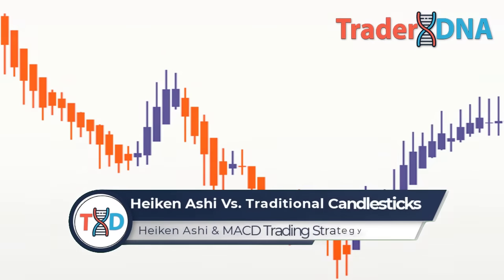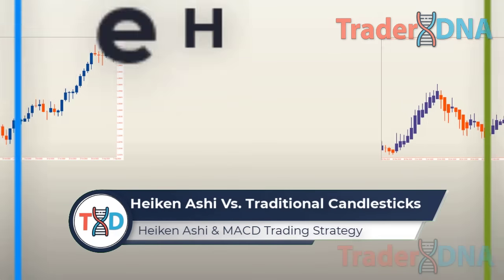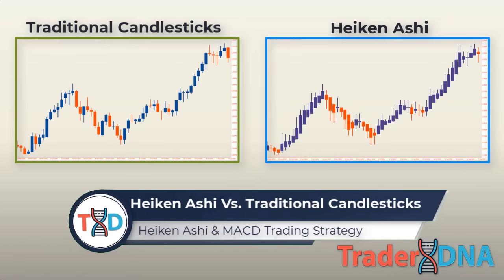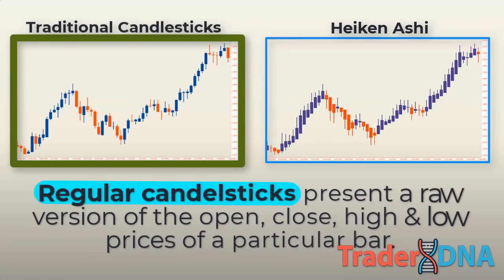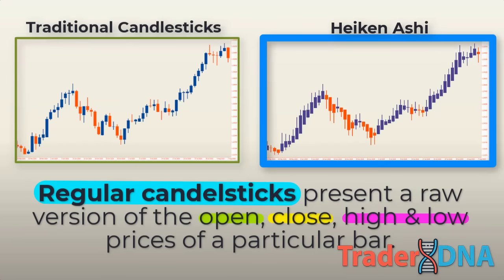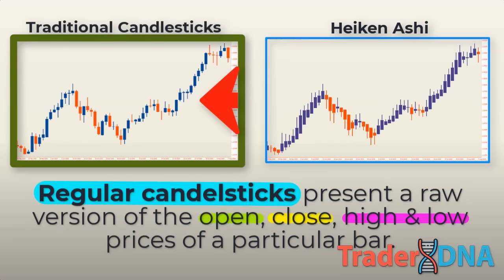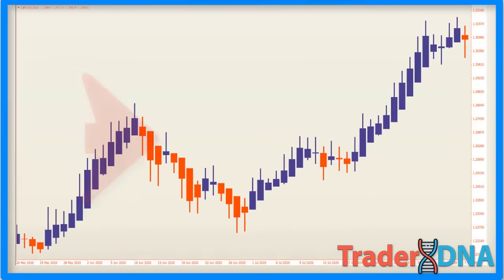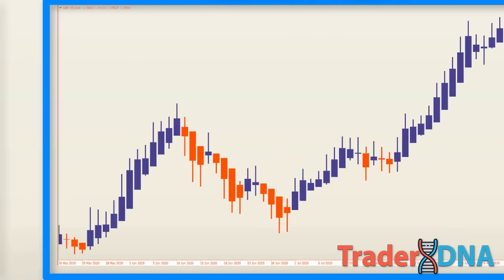The main difference between the traditional candlestick chart and the Heiken Ashi chart is that the Heiken Ashi candles provide a smooth averaged version of price action, whereas traditional candlesticks include the noise of major price changes. Regular candlesticks present a raw version of the open, close, high, and low prices, while Heiken Ashi candles present an averaged version dependent on the previous candle's data. The chart on the left is the traditional Japanese candlestick chart and the chart on the right is the Heiken Ashi chart. Directional moves are smoothed out in a way absent from the left chart.